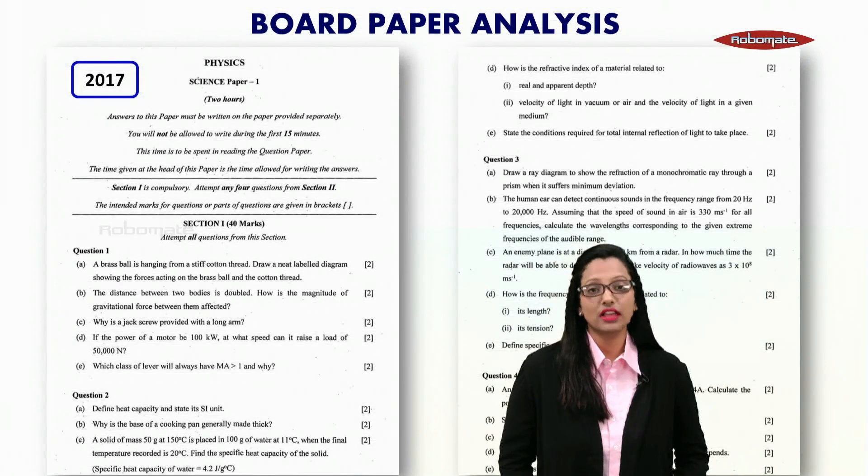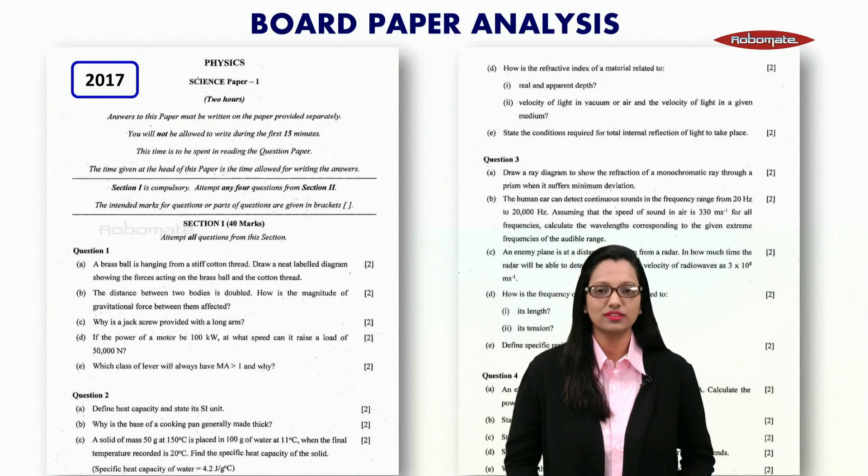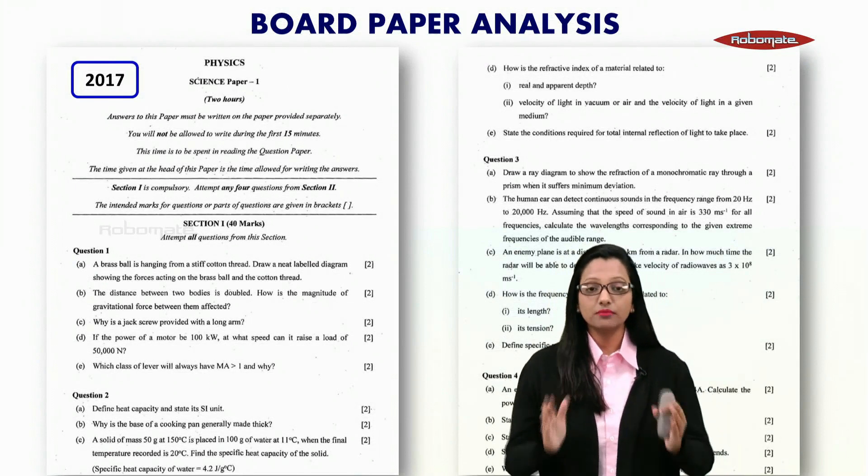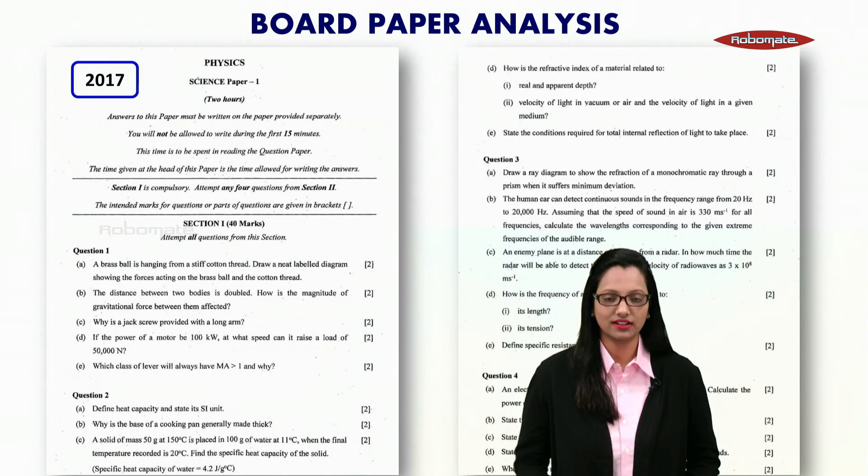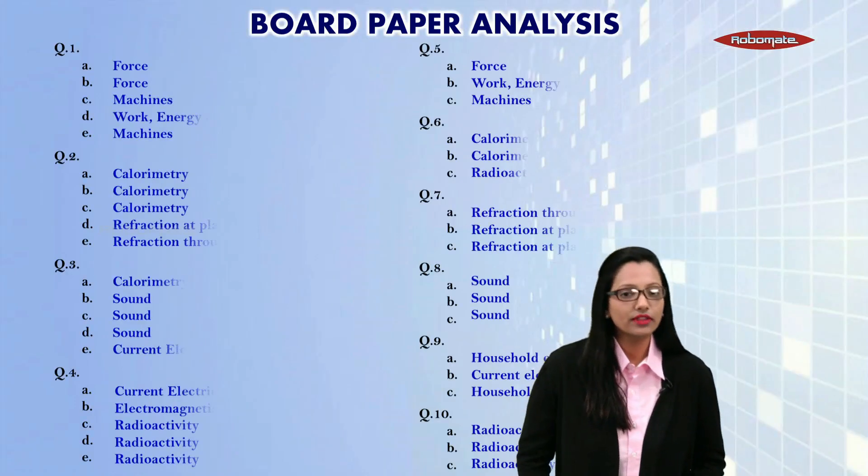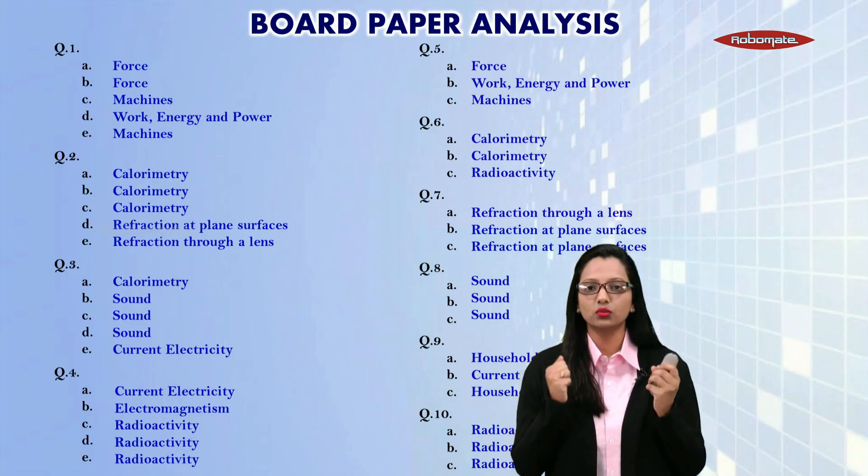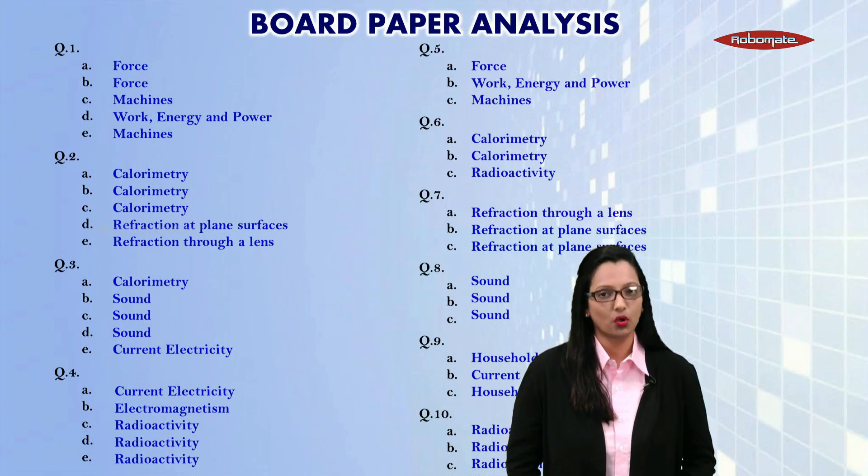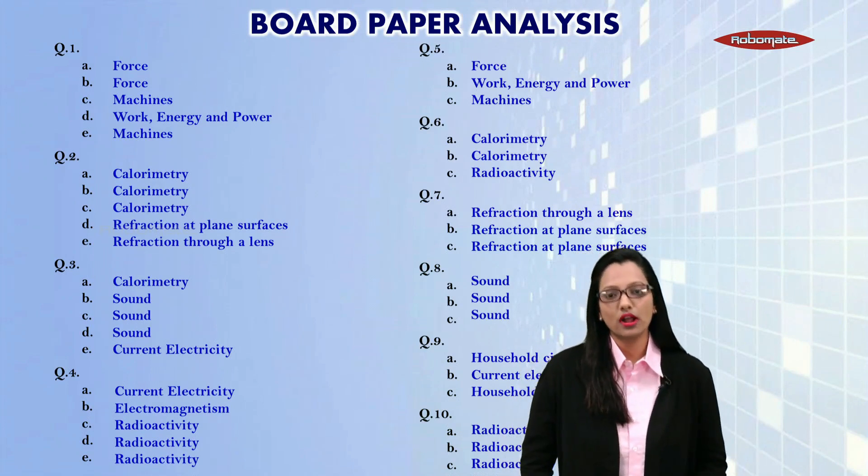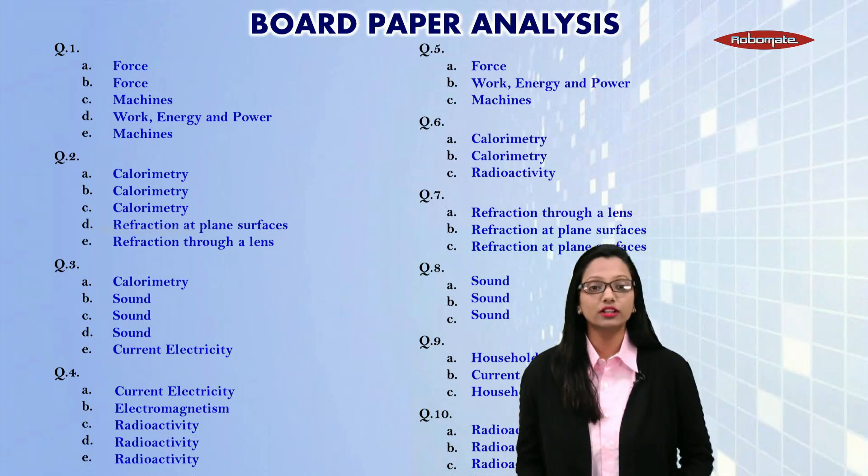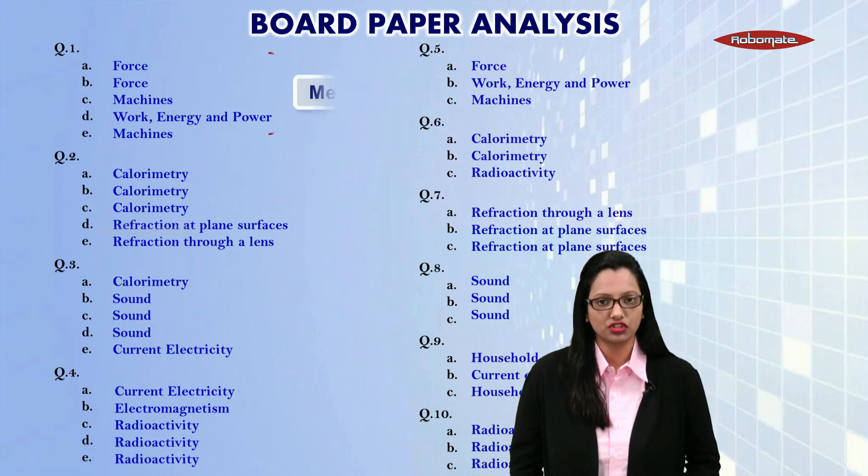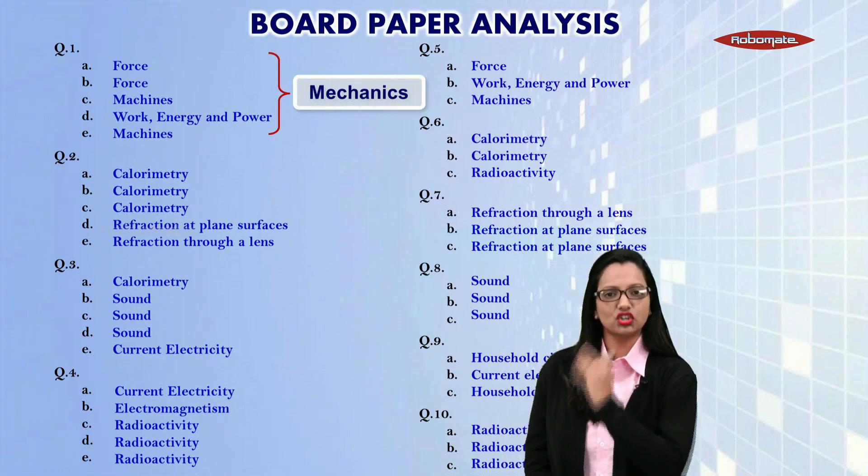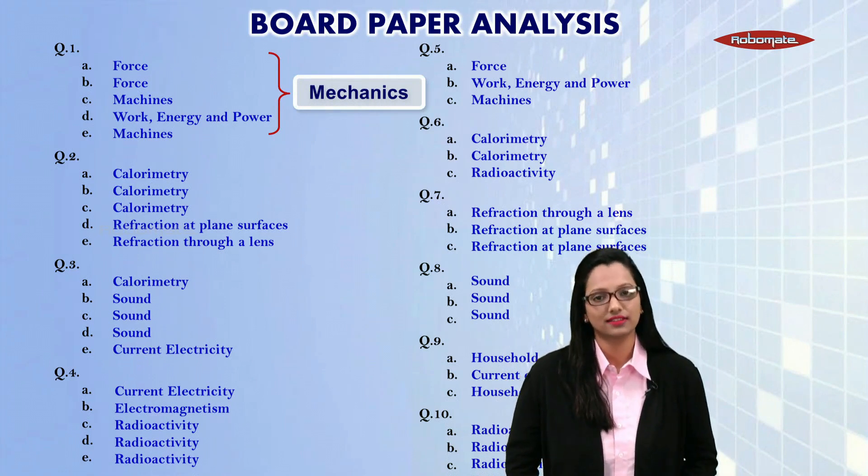Next we have a thorough analysis of the latest 2017 board paper. Let me draw your attention to some important facts that we figured out from this analysis. We have picked out the chapter to which each question belonged. Looking at Section 1, question number 1, you have questions belonging to the chapters force, machines, and work, power, energy. So this question is dedicated to the mechanics section.